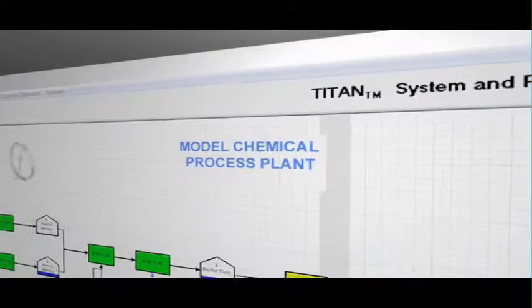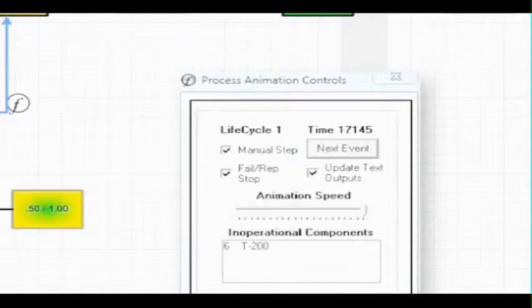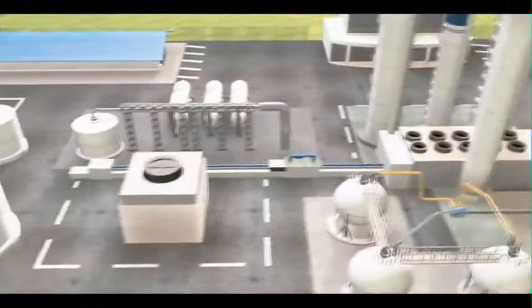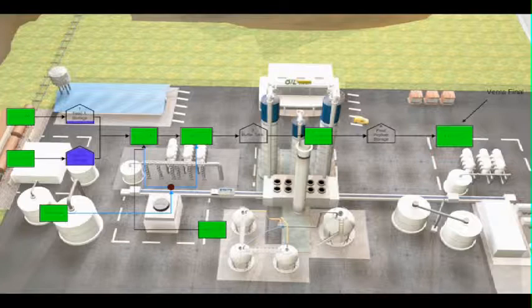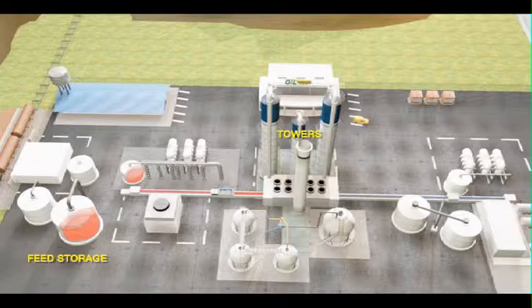Utilizing our state-of-the-art proprietary software, Titan, we are able to make highly accurate predictions of the future performance of any processing system. In other words, through simulation, we predict the future behavior of your plant and the variation in the behavior given the current design, operations and maintenance practices.